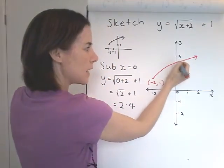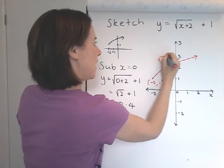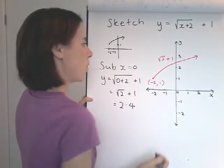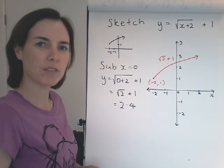Label the y-intercept as well with the exact form, so it's there at root 2 plus 1. That's the level of detail you need on the good copy of your graph.